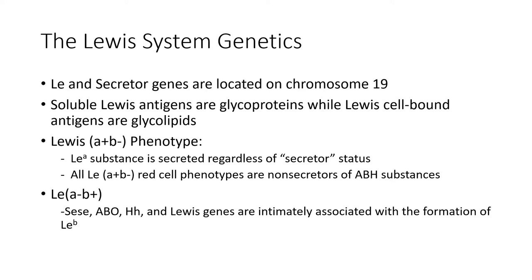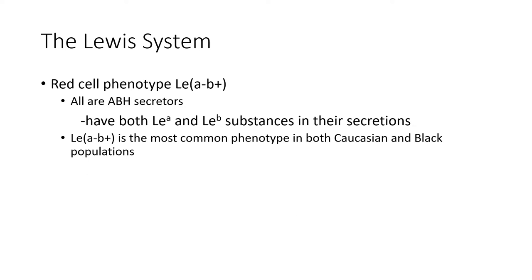The Lewis A negative, B positive phenotype is produced when you have both the capital LE and the capital SE genes. People with the phenotype Lewis A negative, B positive are secretors. The secretor ABO, H and Lewis genes are intimately associated with the formation of the Lewis B antigens. So if you know that a person's Lewis phenotype is Lewis A negative, B positive, you know they are a secretor. The secretions will have both Lewis A and Lewis B substances. The most common Lewis phenotype is Lewis A negative, B positive.